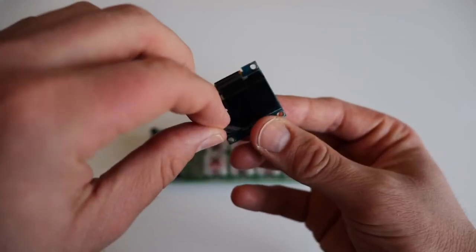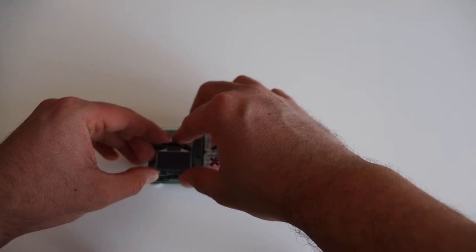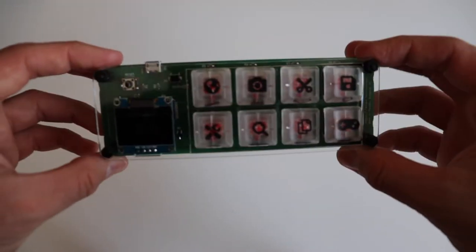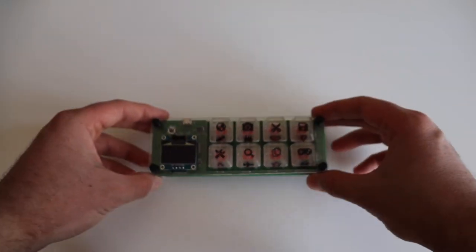Peel off the protective film and place the mini OLED display as shown in the video to ANAVI MacroPad 8. Pay attention to the label that indicates the pin connectors of the display. They must match the labels on the keyboard.